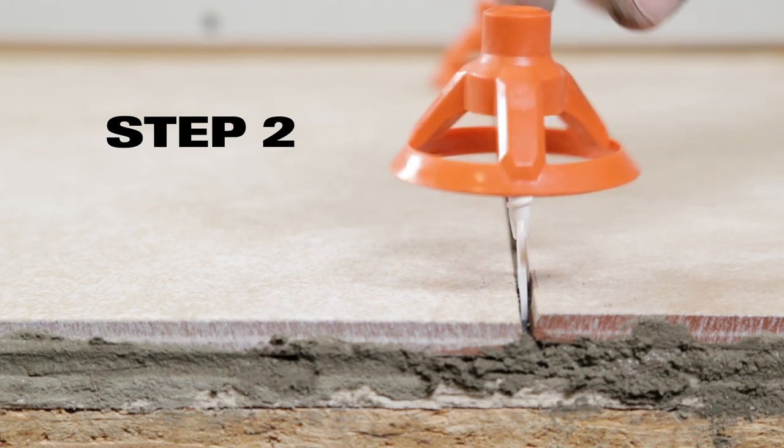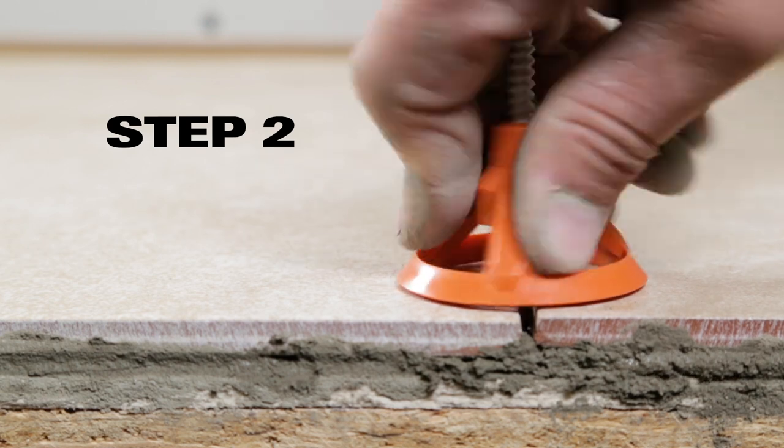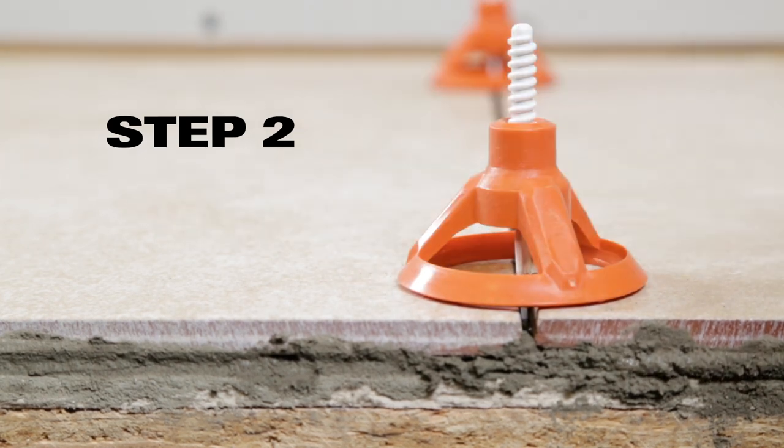Step 2. After you've laid down all the joining tile, spin the top, Part A, all the way down until all the tiles are flush to each other.